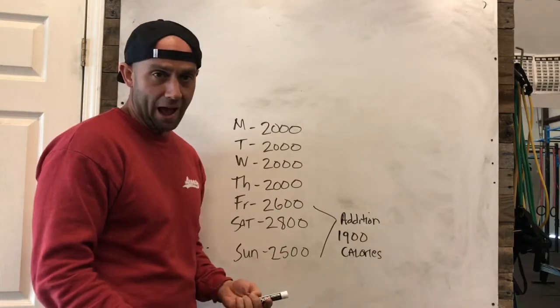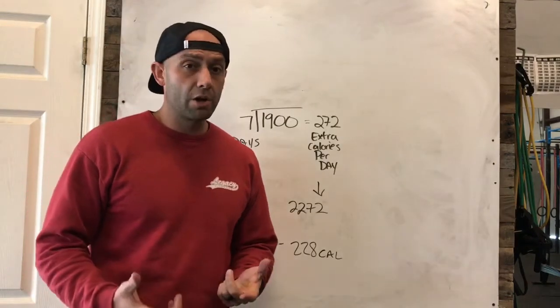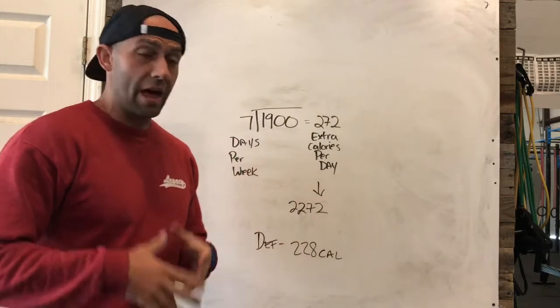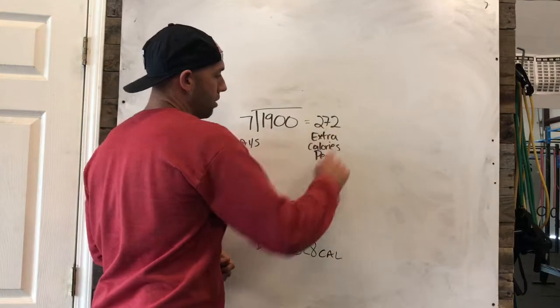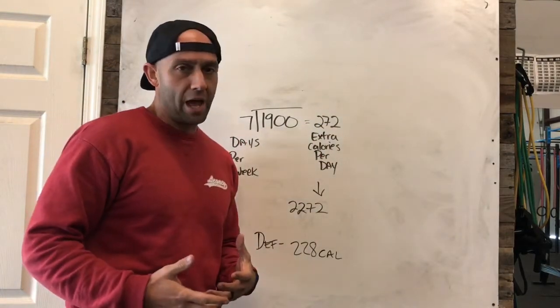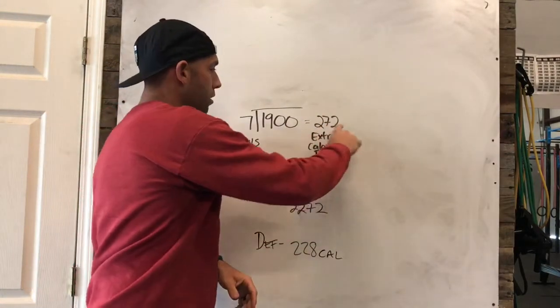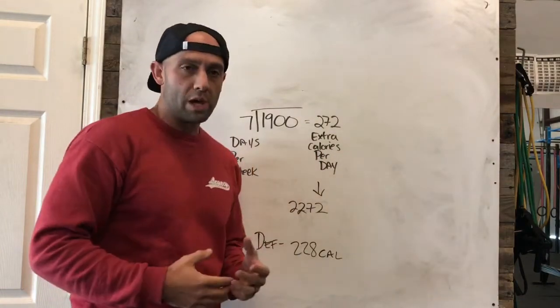If you use the 1,900 calories from Friday, Saturday and Sunday, the extra calories that we ate, and you divide it out by seven days per week, you end up with 272 extra calories per day. Now if you add that 272 calories per day to each day of the week, instead of it being 2,000, now we're eating 2,272 calories.